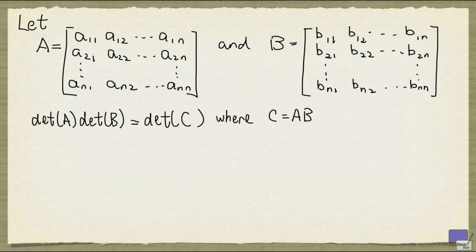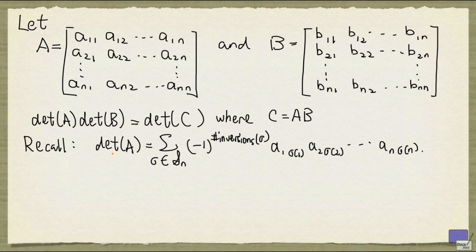Let's first recall the definition of determinant. The determinant of A is defined as follows: you sum over all permutations sigma coming from the set of permutations of 1 up to n. Each term in the sum is minus 1 to the number of inversions of the permutation, and you take the product of A_{1,σ(1)}, A_{2,σ(2)}, and so on up to A_{n,σ(n)}.